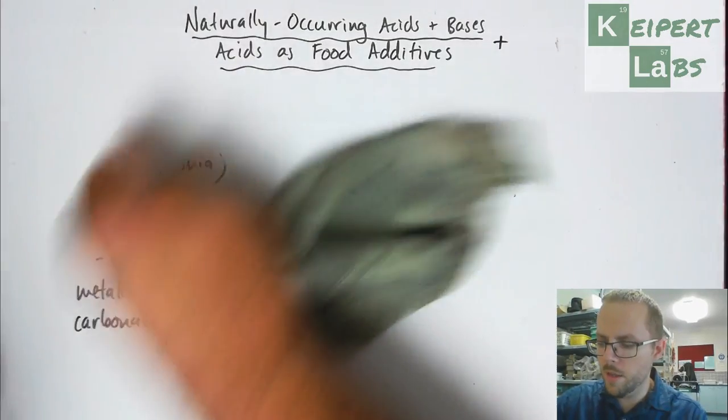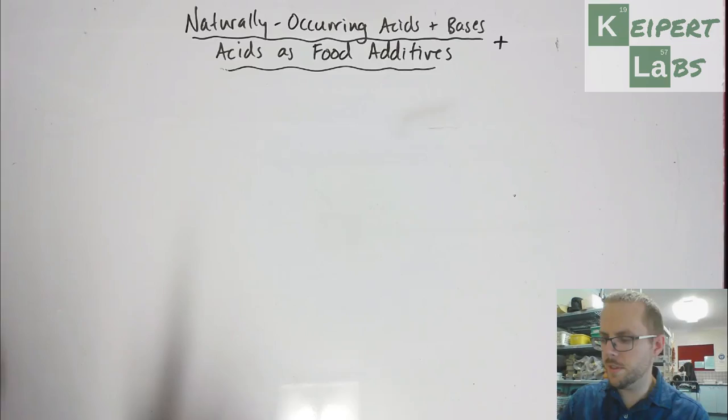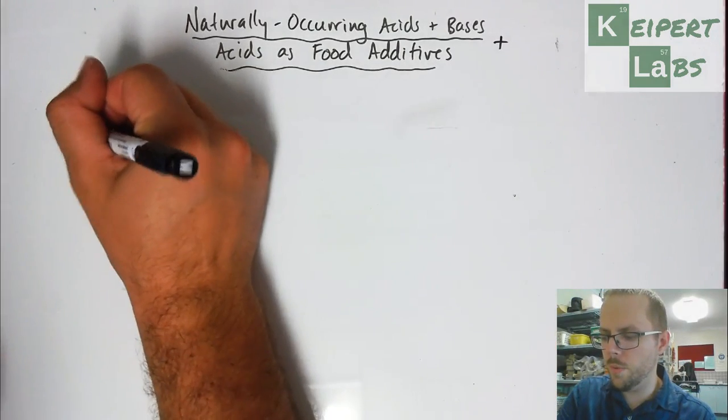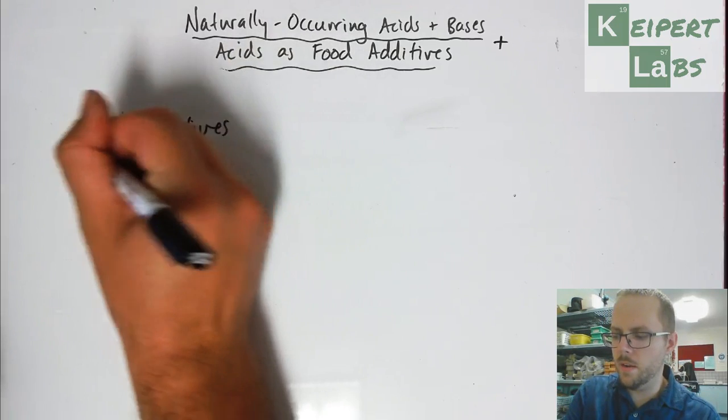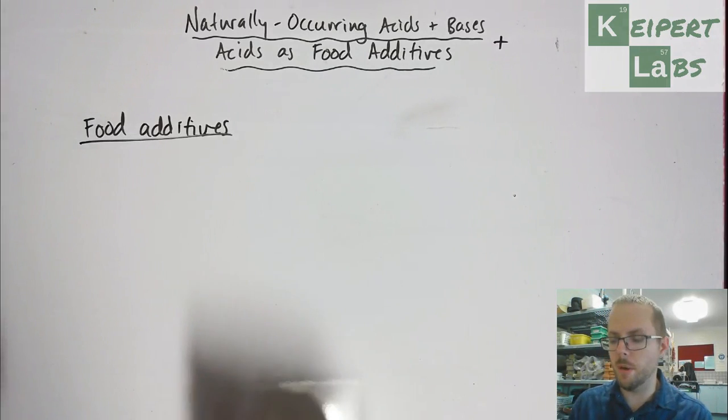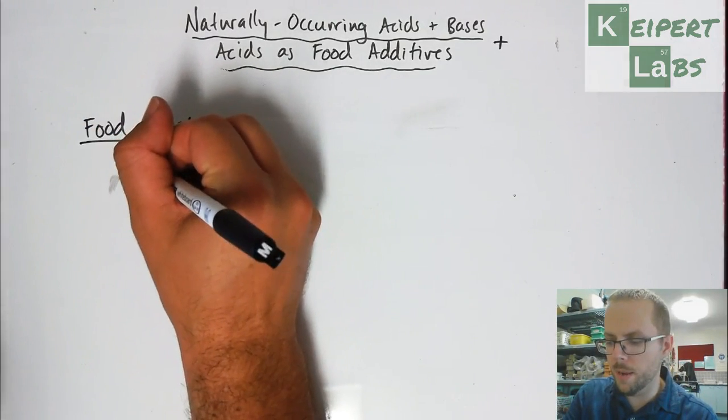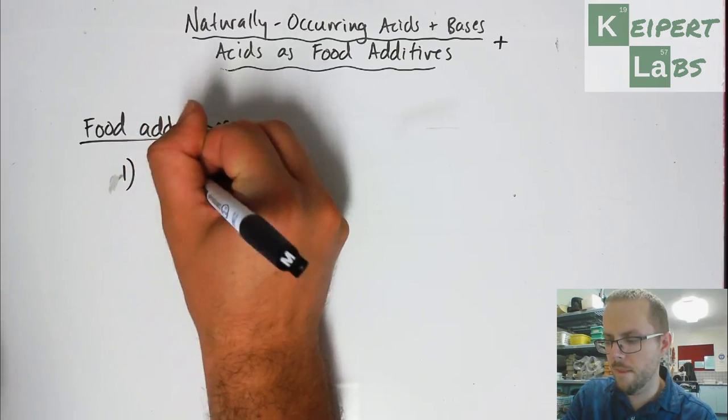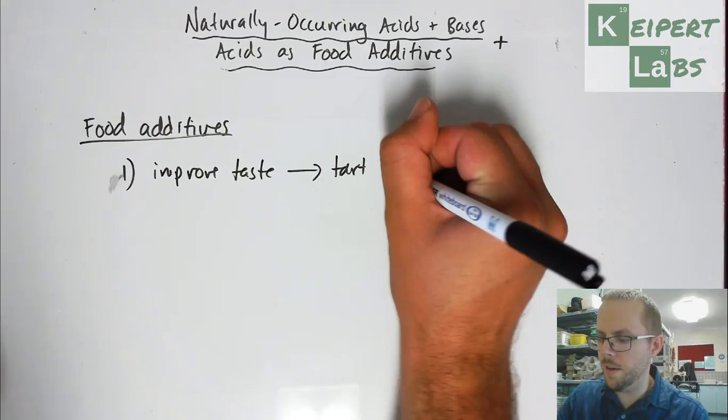Now we're going to think about this idea of acids as food additives. So, food additives. So we are thinking about, when we're thinking about why acids might be added to food, there's two main reasons. The first one is to improve the taste. That is to give things a tart flavor.